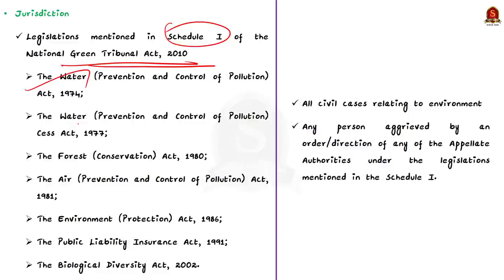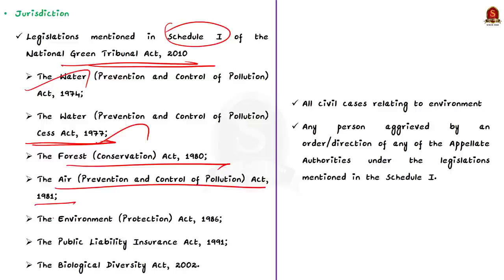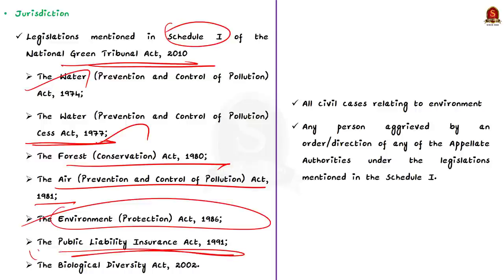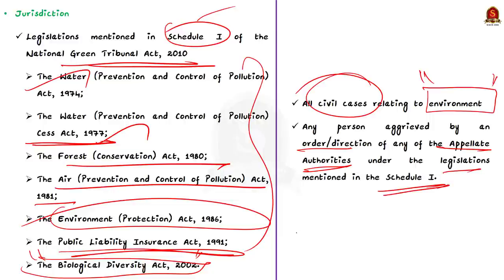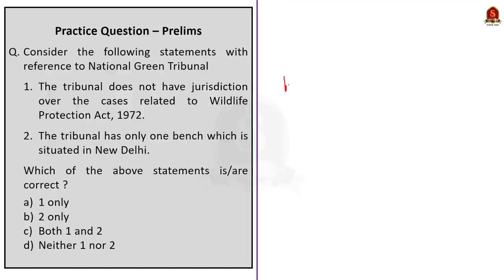Any person seeking relief or compensation for environmental damage involving subjects in Schedule 1 of the NGT Act 2010 may approach the tribunal. The statutes in Schedule 1 include: Water (Prevention and Control of Pollution) Act 1974, Water (Prevention and Control of Pollution) Cess Act 1977, Forest Conservation Act 1980, Air (Prevention and Control of Pollution) Act 1981, Environment Protection Act 1986, Public Liability Insurance Act 1991, and Biological Diversity Act 2002. The tribunal has jurisdiction over all civil cases involving a substantial question relating to the environment, and any person aggrieved by an order under any of these legislations can challenge it before the NGT.